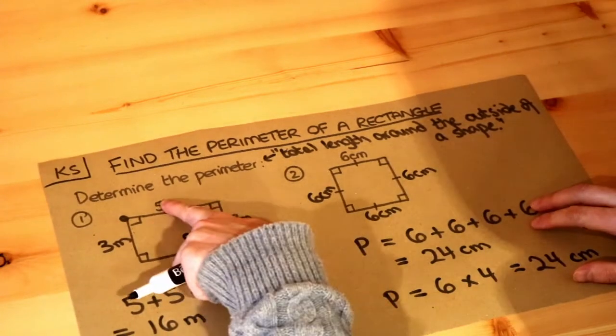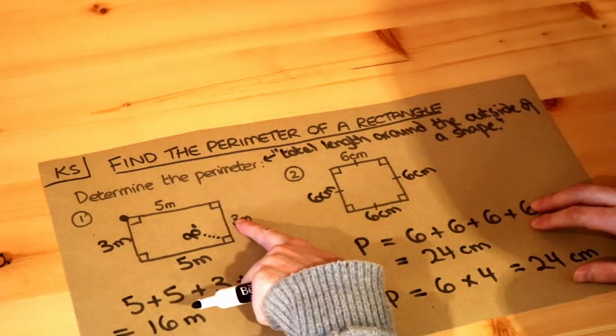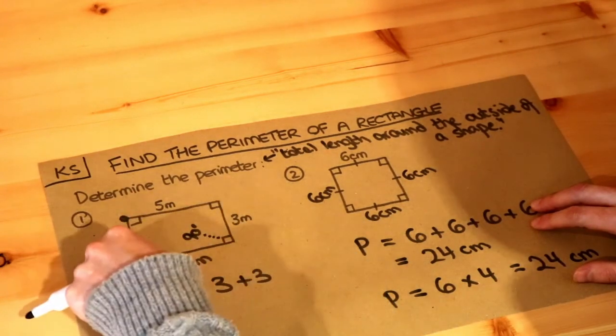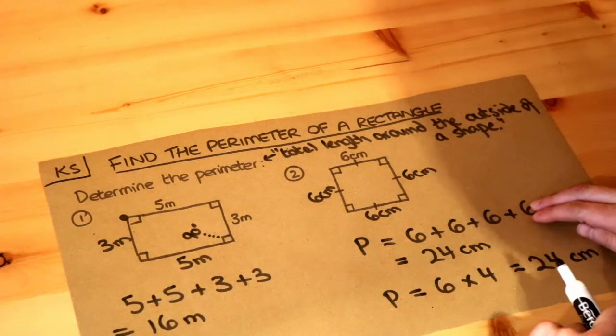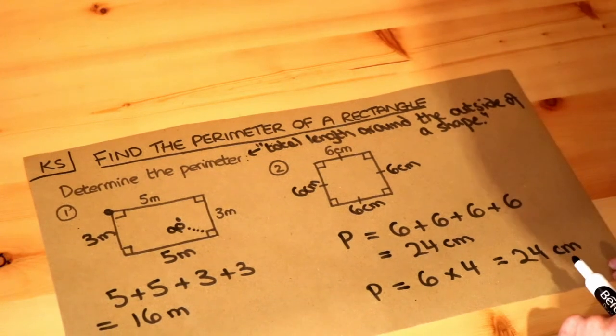Similarly, you could have added the 5 and the 3 here. 5 plus 3 is 8, and that's doubled up. We've got 2 of those. 8 times 2 is 16, which is right. So that would have been a slightly quicker way of doing the first question.